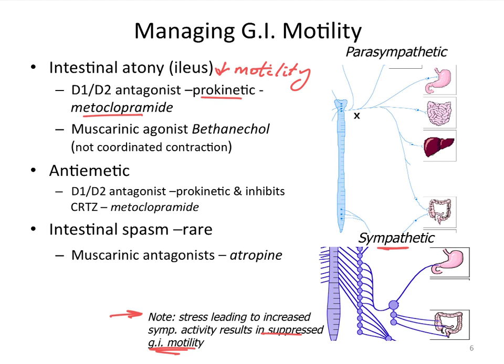Bethanechol is occasionally still used historically in an attempt to increase GI tone, but the problem is that it produces uncoordinated contraction rather than coordinated motility. Re-normalizing the complex GI function, particularly in ruminants or horses, really requires physiological re-normalization through feeding and other means.